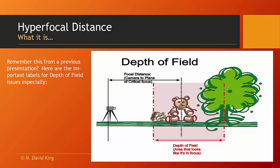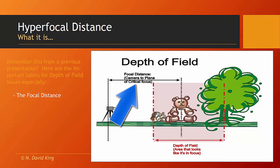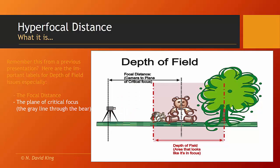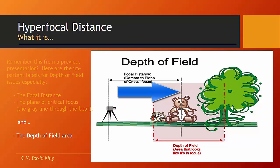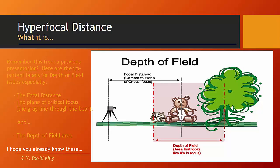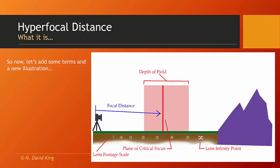Let me illustrate this. Going back to the illustration used in the depth of field presentation: the focal distance is the distance from the image plane to the critical focus — or the subject — and in this case that point of critical focus is the gray line through the little bear. The depth of field area extends a third toward the camera and two thirds behind it. Hopefully you already know this, but it would be wise to go back and review it because it's likely to be on a test somewhere down the line.